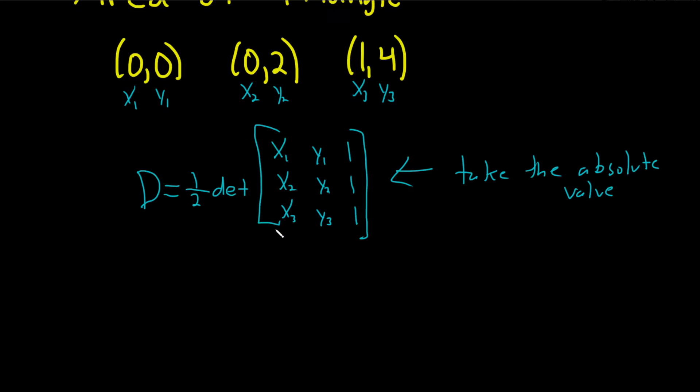Okay, so let's work it out, see what we get. So this is equal to one-half times the determinant of, so 0, 0, that's our x1, y1, so it'll just be 0, 0, and then 1. And then we'll have 0, 2, 0, 2, and then 1. And the last one is 1, 4, and then 1.